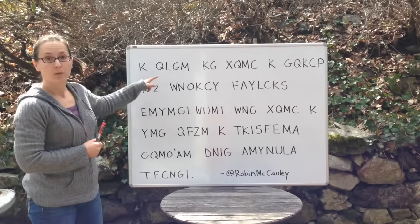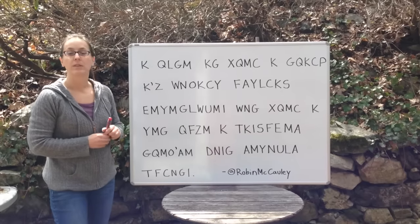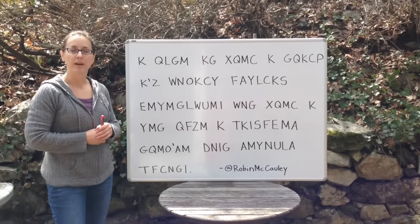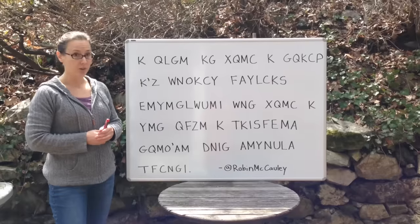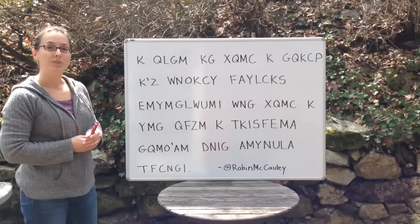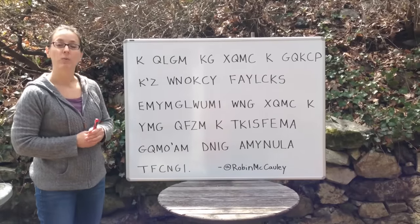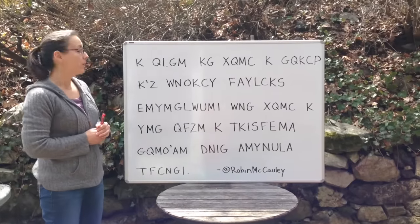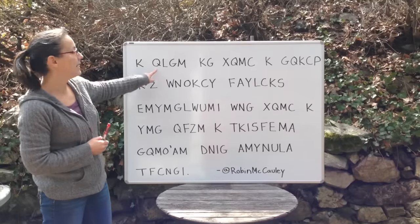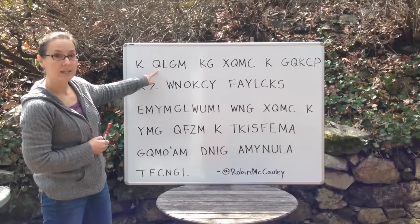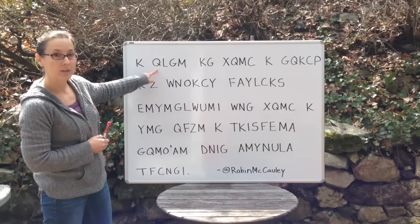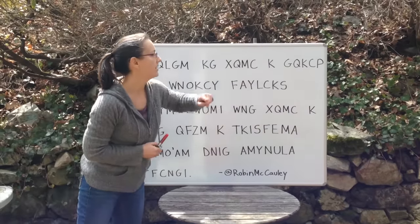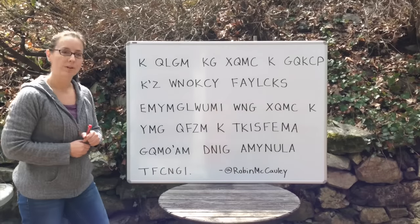For example, this Q could theoretically be any letter in the alphabet except Q. Your job is to figure out which letter it could be, and once you figure that out, you'll write it in for every instance of Q in the code — so here, there, and so on and so forth.